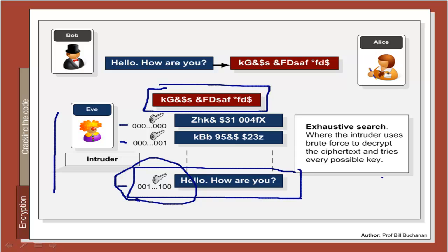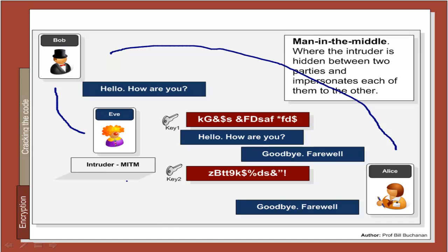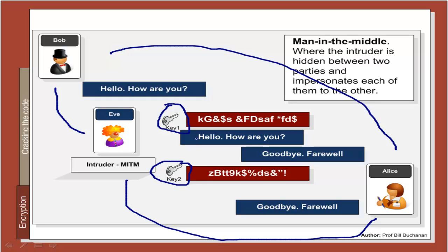Another method is the man-in-the-middle, or Eve-in-the-middle, where Eve gets herself between the communications. Bob thinks he is communicating directly with Alice, but is actually communicating with Eve, who is also communicating with Alice. There are two communication channels: one between Bob and Eve, and one between Eve and Alice. Eve generates one key for Bob's communications and another for Alice's. The encryption happens, Eve decrypts the message, reads it, can modify it, then re-encrypts it with the new key and sends it to Alice. The man-in-the-middle attack is one of the most difficult to overcome.